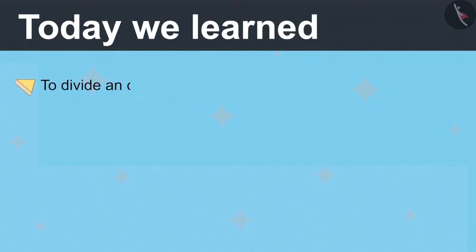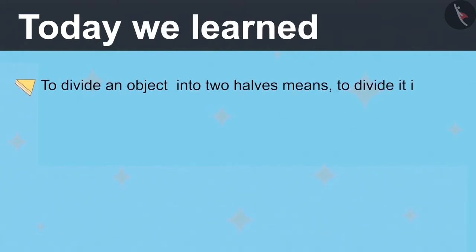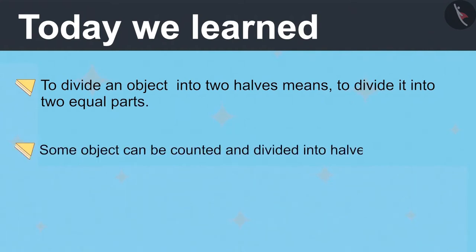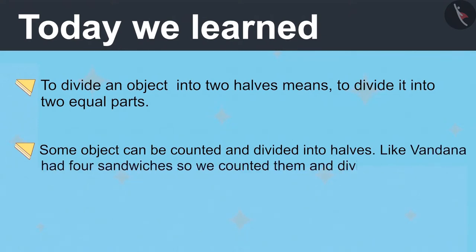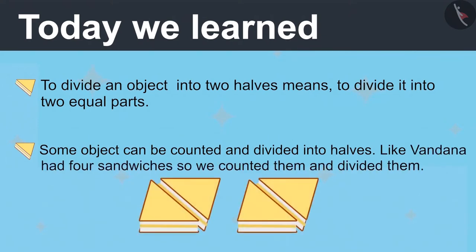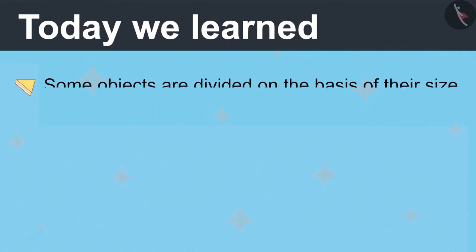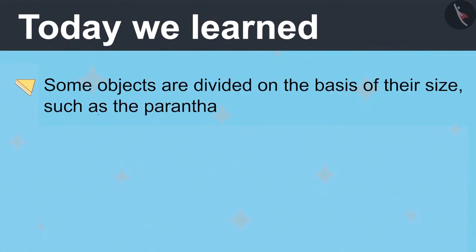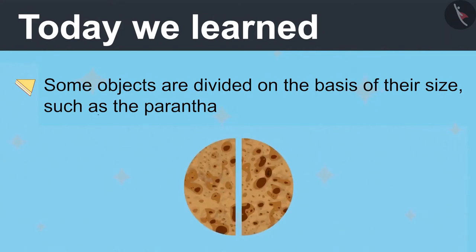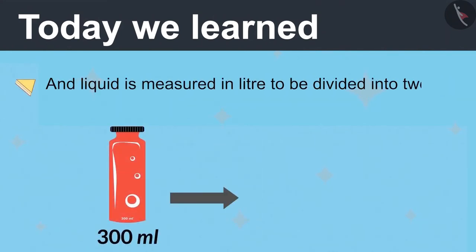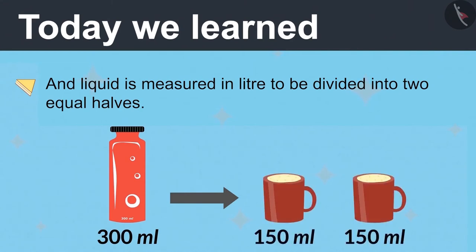Today we learnt that to divide an object into two halves means to divide it into two equal parts. Some objects can be counted and divided into halves, like Vandana had four sandwiches so we counted them and divided them. Some objects are divided on the basis of their size, such as the paratha. And liquid is measured in liter or milliliter to be divided into two equal halves.